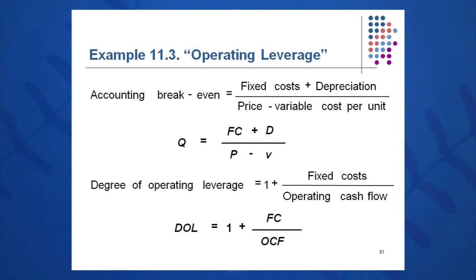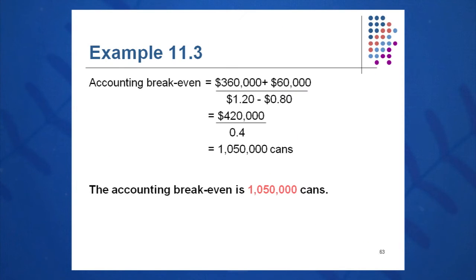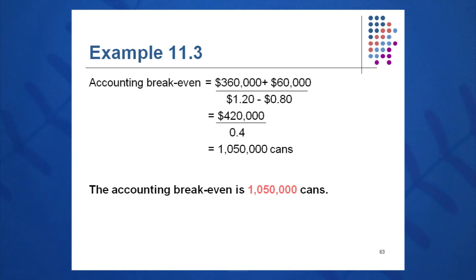The breakeven quantity on an accounting basis is fixed cost plus depreciation over contribution margin. So the accounting breakeven quantity in cans is fixed cost of $360,000 plus OCF of $60,000, divided by the contribution margin of $0.40, which gives an accounting breakeven quantity of 1,050,000 cans.